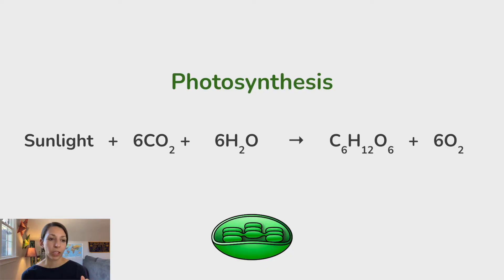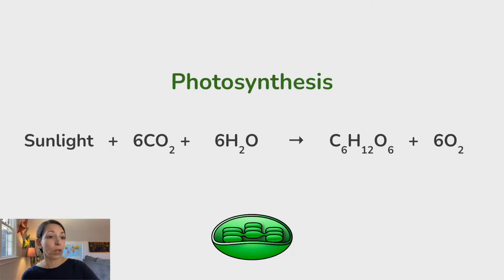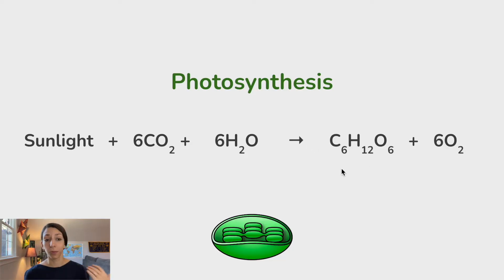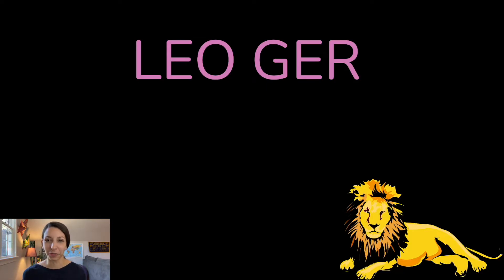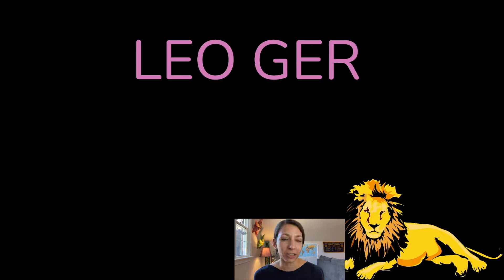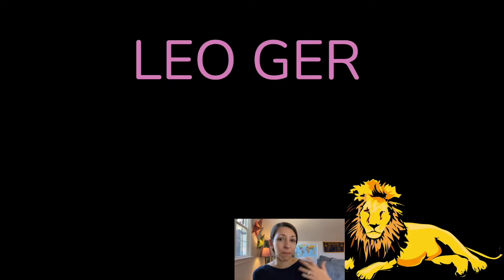A quick refresher on chemical equations — this is the summary of reactions in photosynthesis. On one side we have our reactants, the arrow means yields or produces, and on the other side we have our products. A very specific type of chemical reaction is oxidation-reduction reactions, also called redox reactions. They're really at the center of many important biological processes like cellular respiration, photosynthesis, and different metabolic pathways.